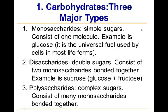The most important example of a monosaccharide — and one to remember — is glucose. Glucose is pretty much the universal fuel used by cells in most life forms, and its chemical formula is C6H12O6.